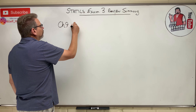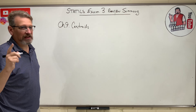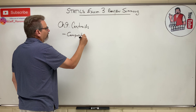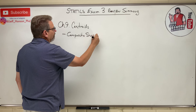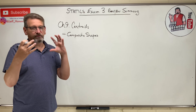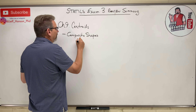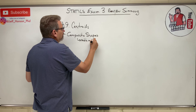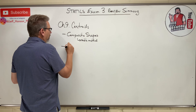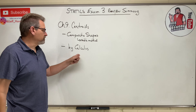Chapter 9 was over centroids. What kind of questions could you possibly get from this chapter? We did composite shapes — that's where we had all those areas with different shapes, and we did even volumes with different shapes, and you had to find the centroid of all those. We used our table method on that. I like the table method. You could also use centroids by calculus — there are several videos to review on that.